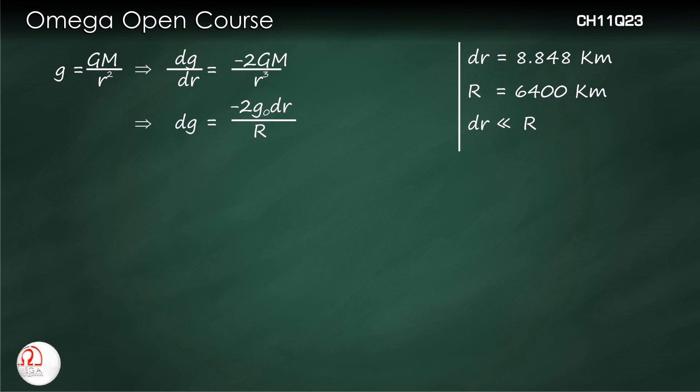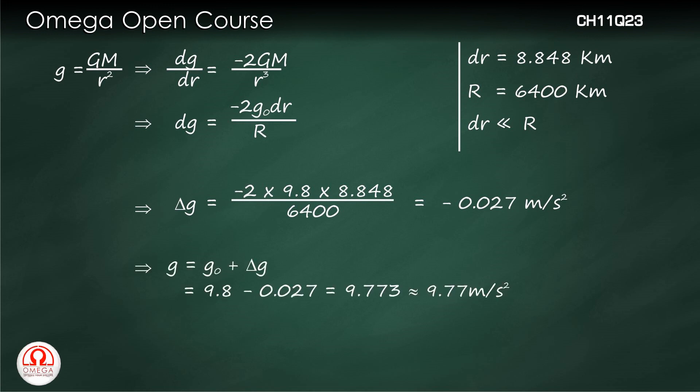The change in gravity will be minus 2 into 9.8 into 8.848 divided by 6400, which is 0.027 meter per second square. Therefore, the acceleration due to gravity on top of Mount Everest is 9.8 minus 0.027, or 9.773 meter per second square.